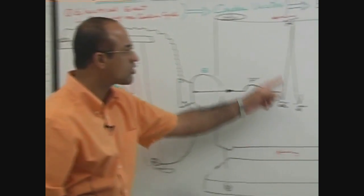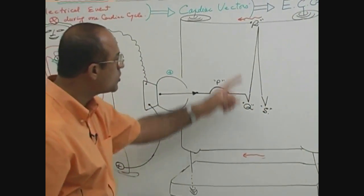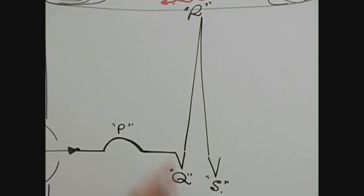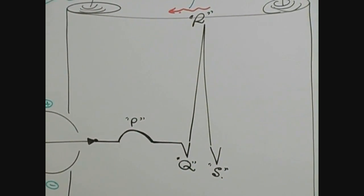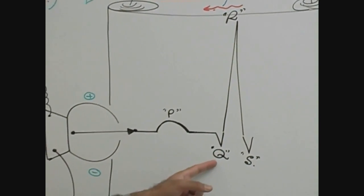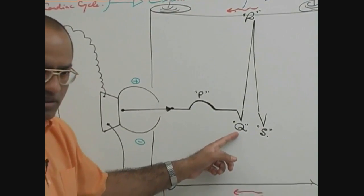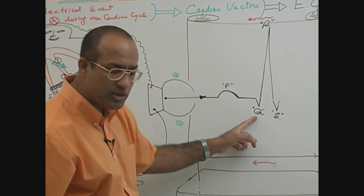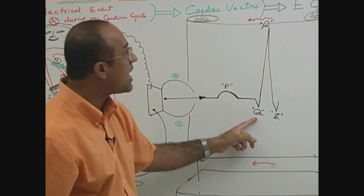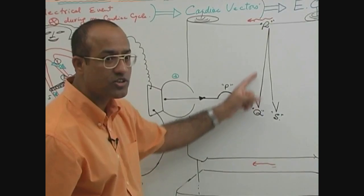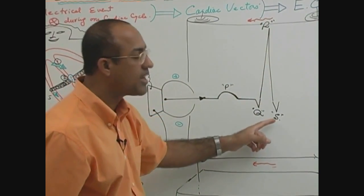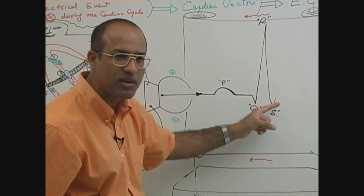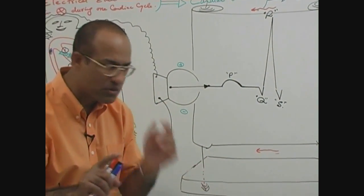Now looking at the whole complex — the three waves Q, R, S — together called the QRS complex. The Q wave represents ventricular septal depolarization. The R wave shows depolarization spreading over the major ventricular part. The S wave shows depolarization spreading into the basal ventricular part.